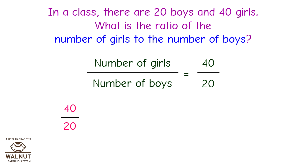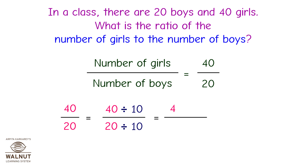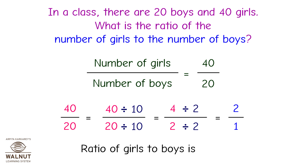That is equal to 40 upon 20. We can keep reducing this fraction as long as there are common factors. We divide the numerator and denominator by 10 and we get 4 upon 2. Then we divide the numerator and denominator by 2 and we get 2 upon 1. Can we divide this fraction further? No. So the ratio of the number of girls to the number of boys is 2 is to 1, and that's the answer.